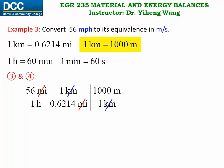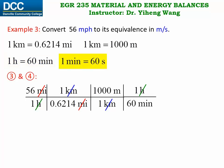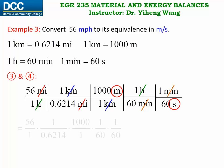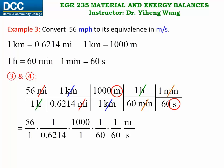Now let's work on the dimension for time. We want to convert from hours to minutes first. From the hour-minute equality we write the conversion factor with hour on the numerator so that hour can be canceled out. And lastly we cancel out minutes using the minute-second equality. As you can see, the only units left are meters for length and seconds for time. We group the numbers together and attach the remaining unit, giving us 25 meters per second — the answer to this problem.